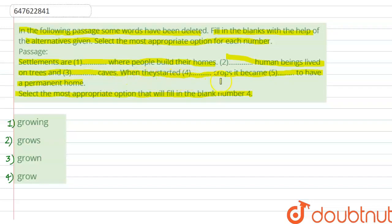In the fourth blank, we are saying that they started dash crops. When we are talking about crops and how they grow, we have the options: growing, grows, grown, grow.